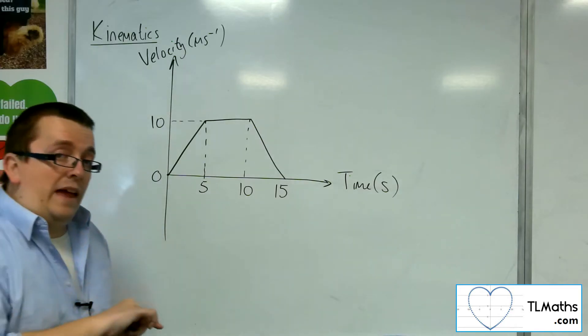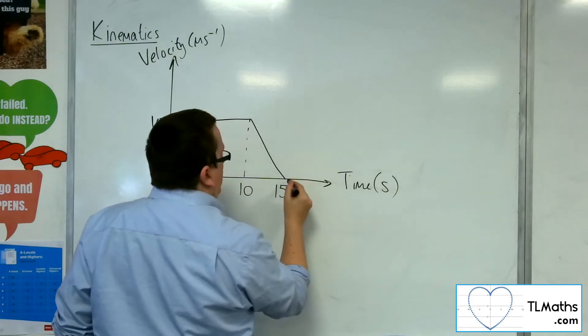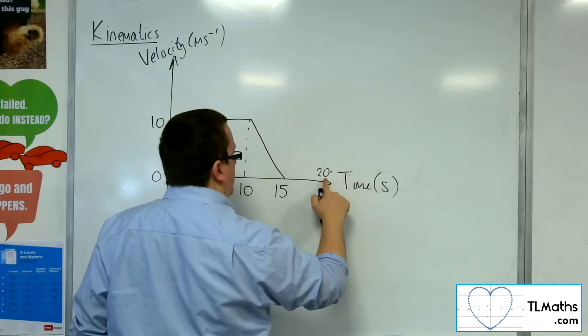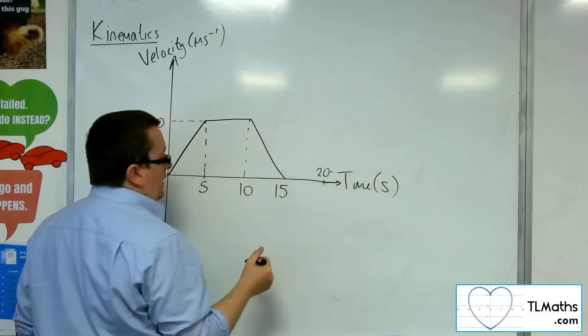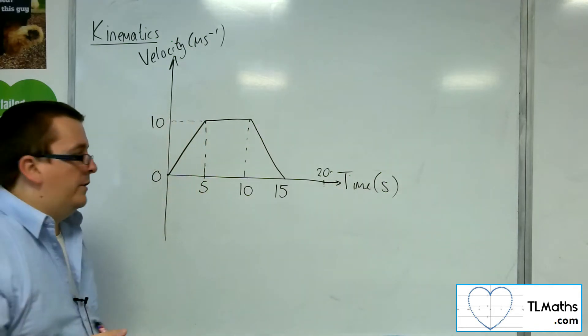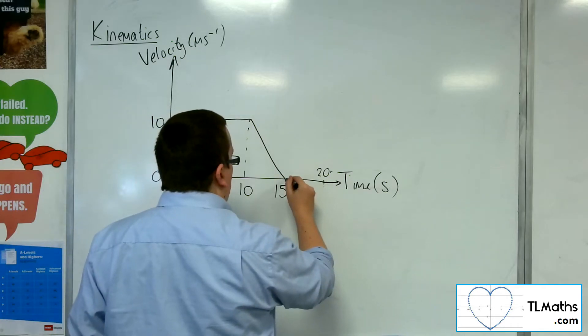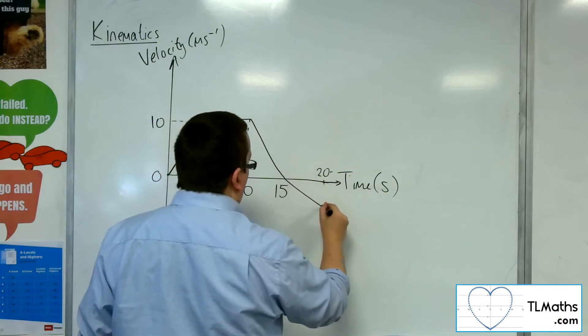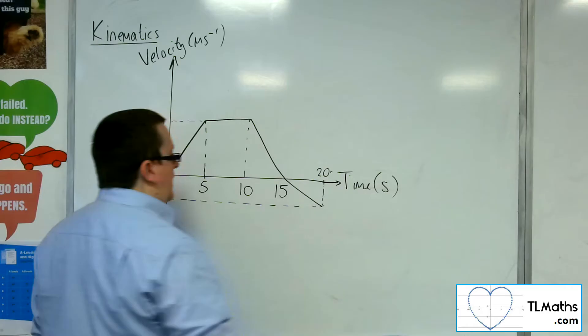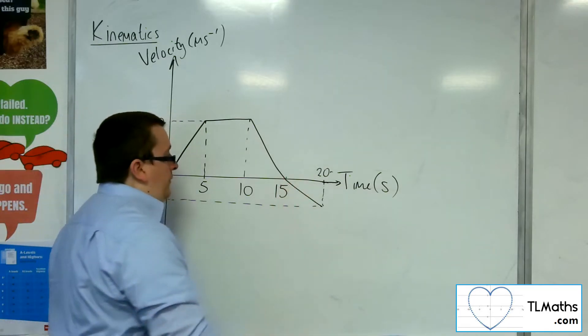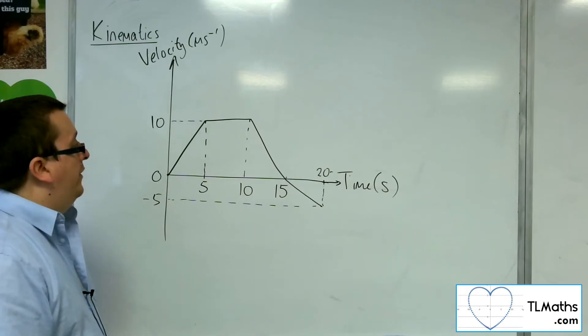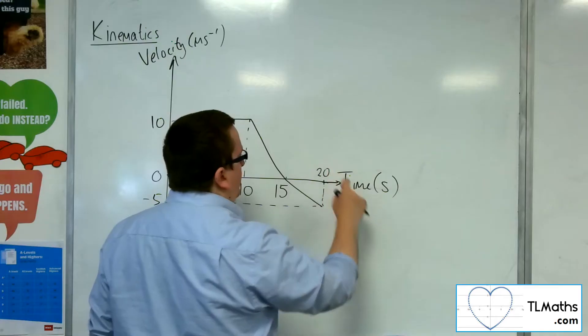It then starts to accelerate for the remaining five seconds. So let's put this up to 20. So it accelerates in the remaining 20 seconds. But it now is going in the opposite direction. And so it reaches, let's say it reaches minus 5 metres per second. So this represents the particle's velocity over time for the first 20 seconds of its motion.